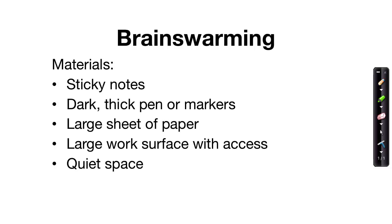Here's what we'll need for the brain swarming process. First, some sticky notes — these are the materials on which you will write different ideas. We need dark, thick pens or markers so that everyone can clearly read the ideas written on the sticky notes. We'll put all the sticky notes on a large sheet of paper placed on a large work surface with access, meaning all participants should be able to move around the diagram to place ideas where they fit. We also need a quiet space — this exercise is done in silence.